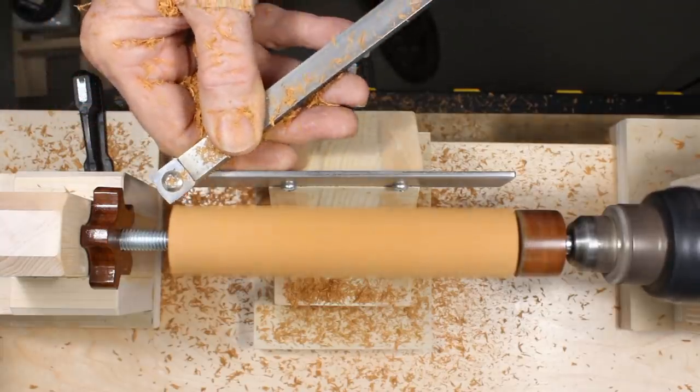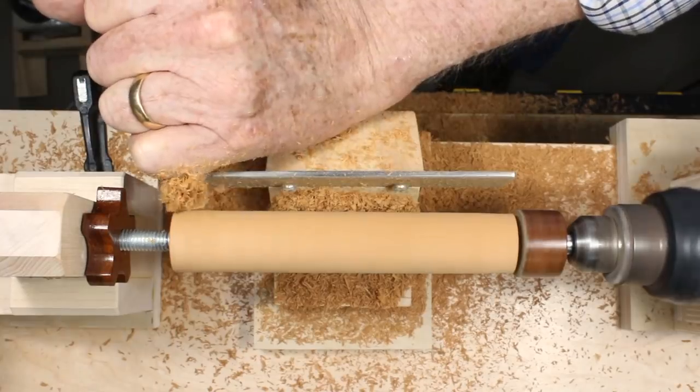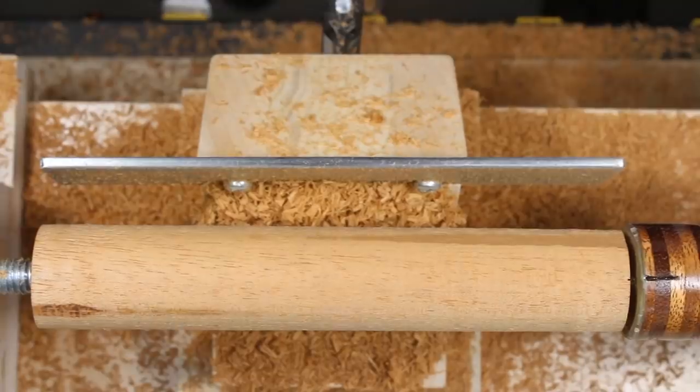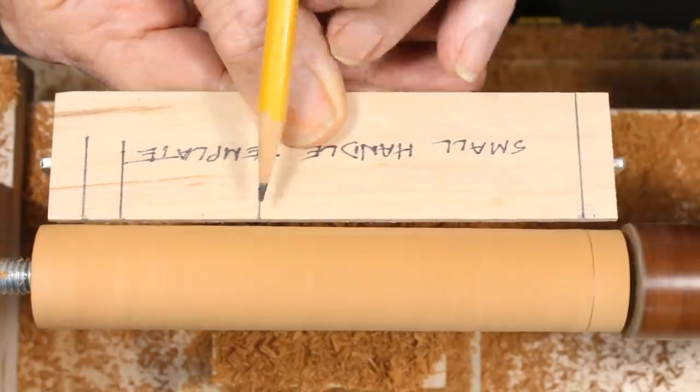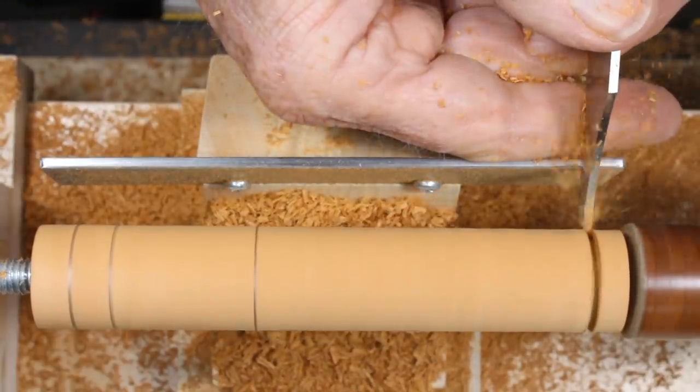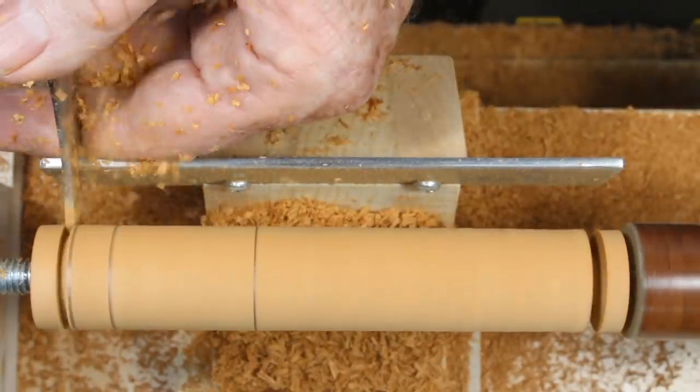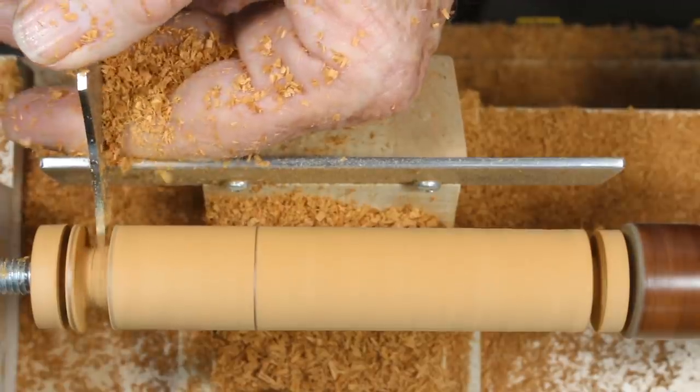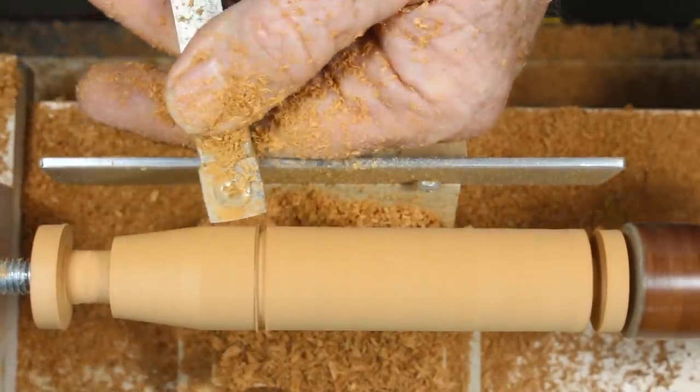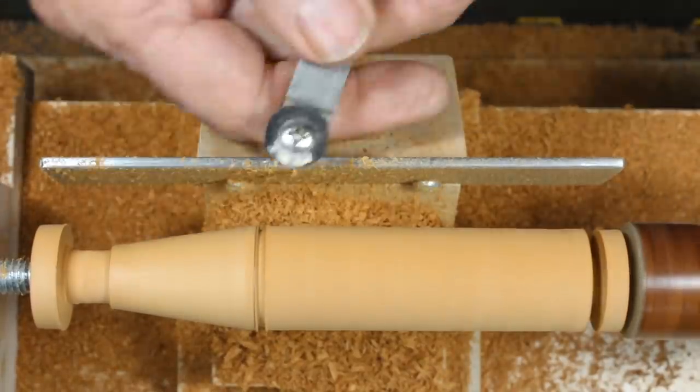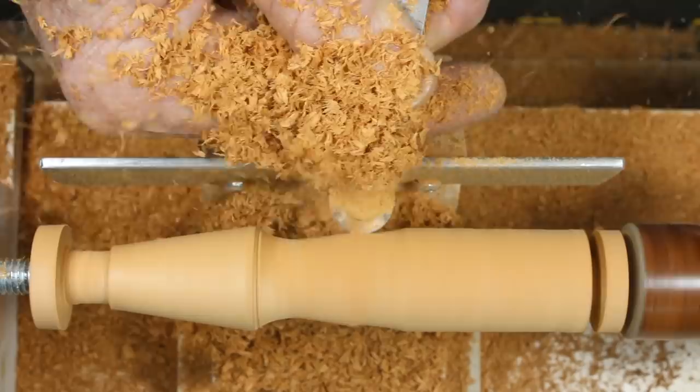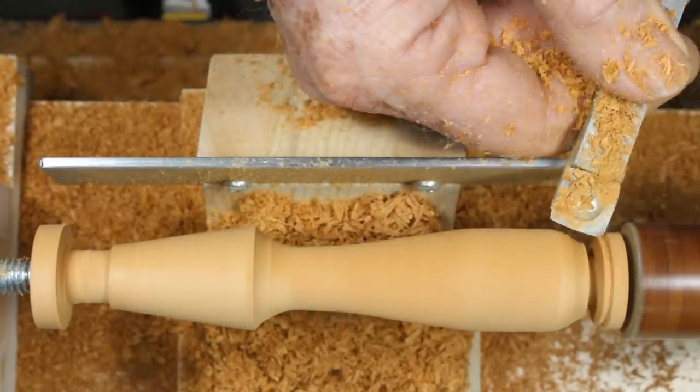I'm going to turn a handle for a file or a chisel as a demonstration. First, rough the rectangular block into a cylinder. I'm using some very simple carbide tools that I made. I mark the pattern directly on the wood and use a parting tool, also homemade, to make some deep cuts. The shape of the handle evolves very quickly. If you have some experience, it might take three to five minutes. If you're new to turning, it'll probably take longer. A professional turner could probably do this handle in two minutes. Most of the shaping is simply done by eye. You cut until you have something that pleases you. It's a lot of fun.